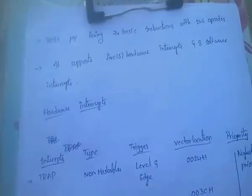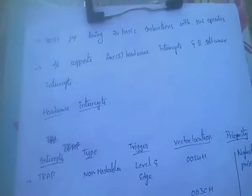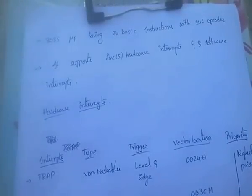The 8085 microprocessor has 74 basic instructions with 246 opcodes.